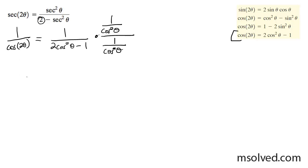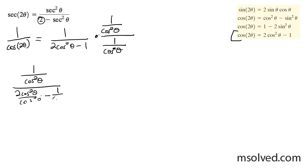That gives me 1 over cosine squared theta, over 2 cosine squared theta minus 1 over cosine squared theta. This becomes secant squared theta on top, and this becomes 2 minus secant squared theta. That's it — we just proved our trig identity.